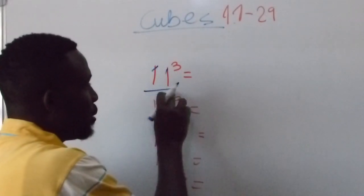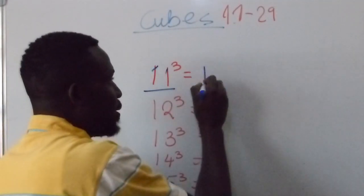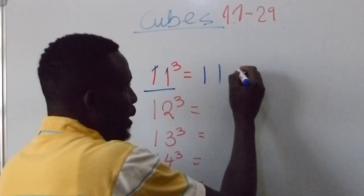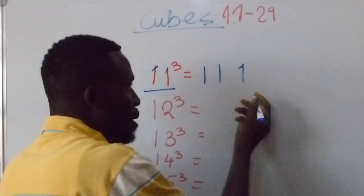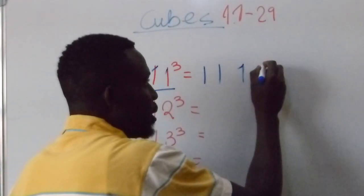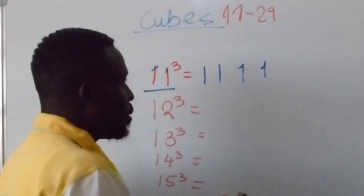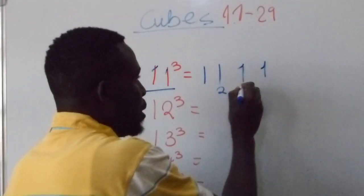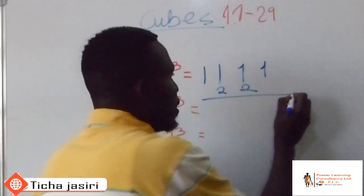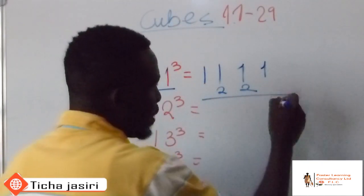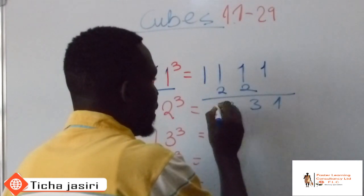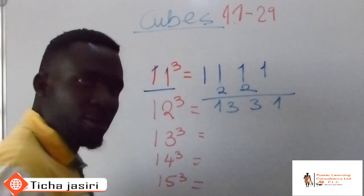If you want to cube 11, just write first 11. Now take this one squared, so it will give you 1, and then the same one, now cube it, so it will still give you 1. Now you take the first 2 numbers and multiply by 2. So this is going to be 2, and this is going to be 2. When you do that, you basically just want to add, and then you have 3, and then you have 3, and then you have 1.